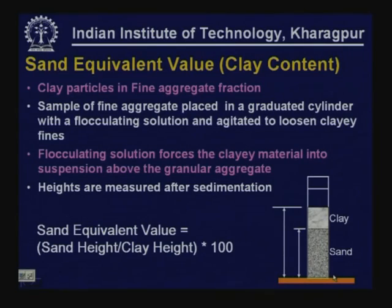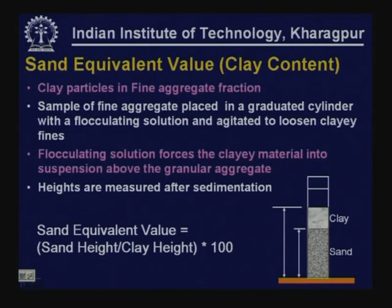The sand equivalent test determines clay content in fine aggregates. A sample of fine aggregate is placed in a graduated cylinder with flocculating solution and agitated to loosen clay fines. The flocculating solution forces clay material into suspension above the granular aggregate — clay rises to the surface and sand settles at the bottom. Sand equivalent value is the sand height divided by clay height expressed as a percentage.